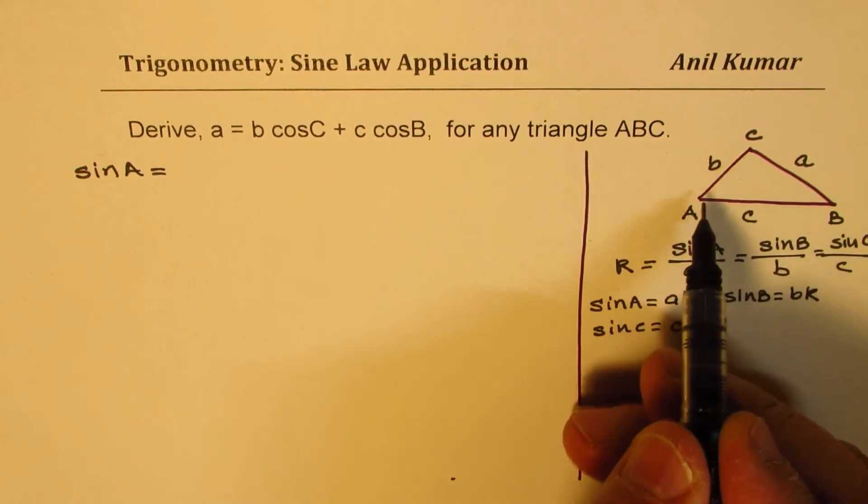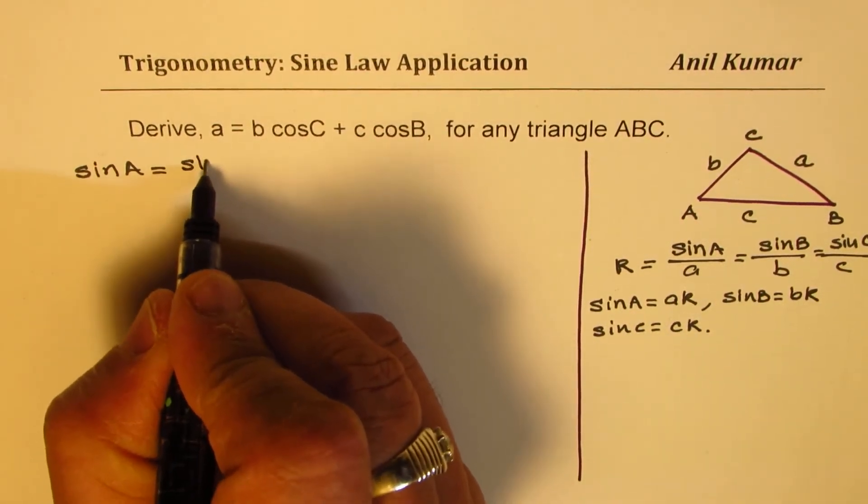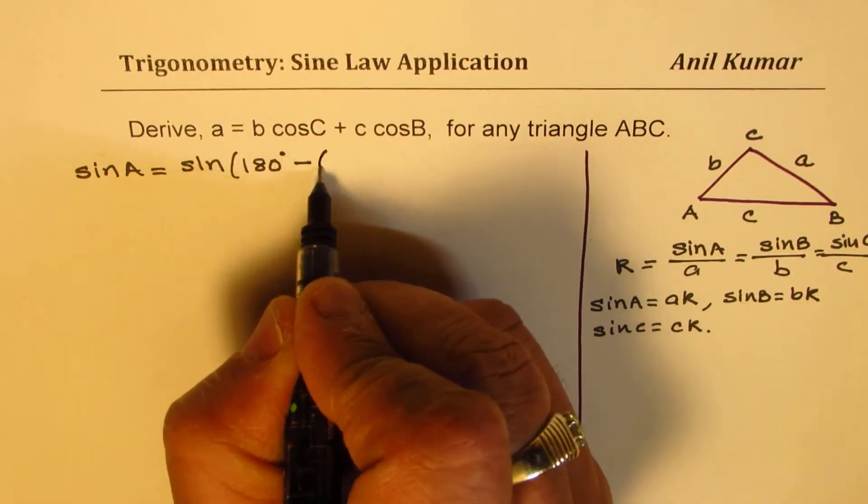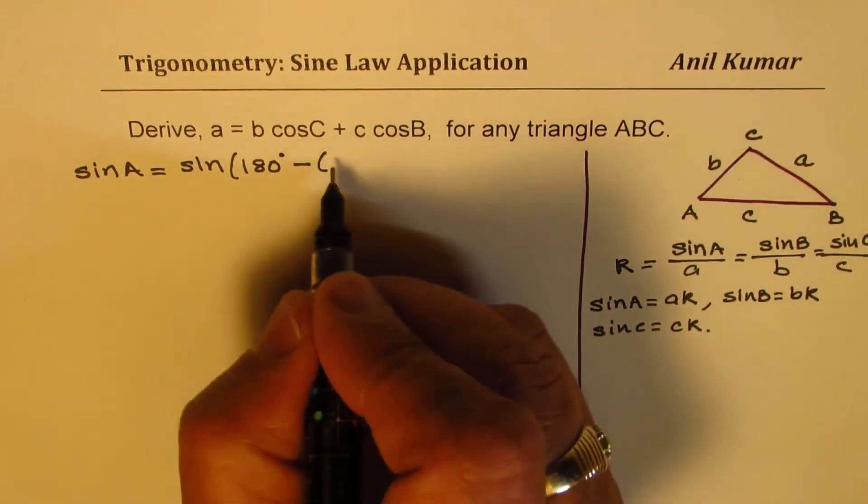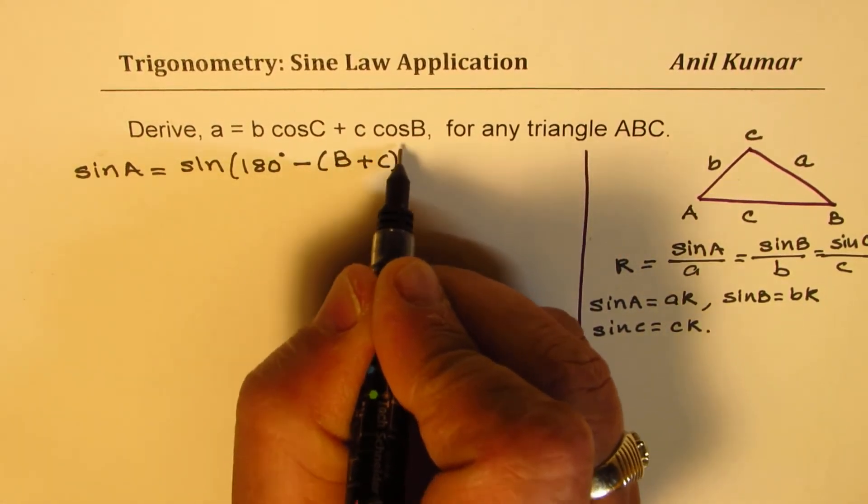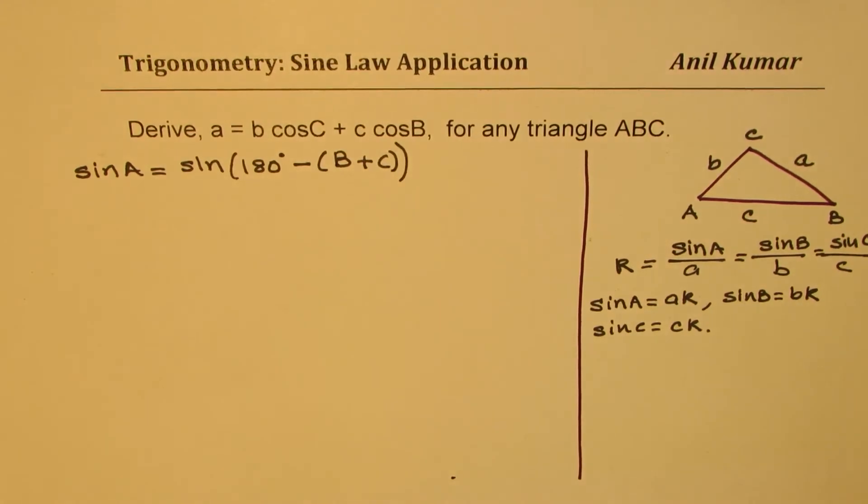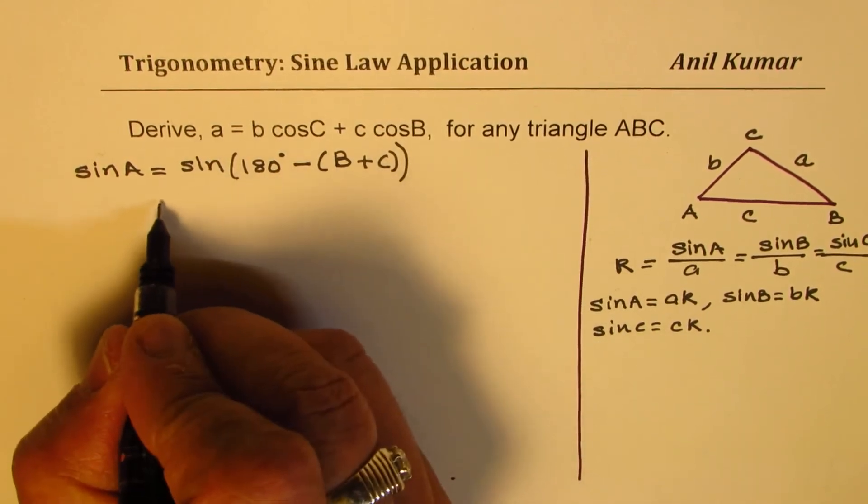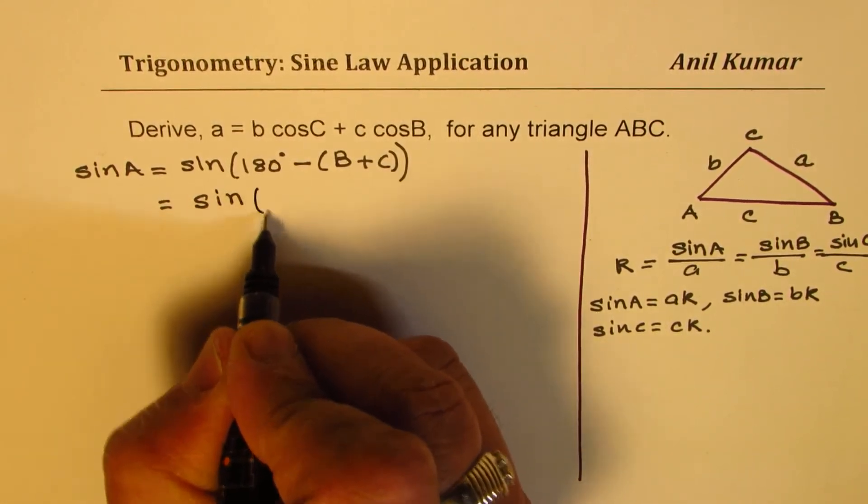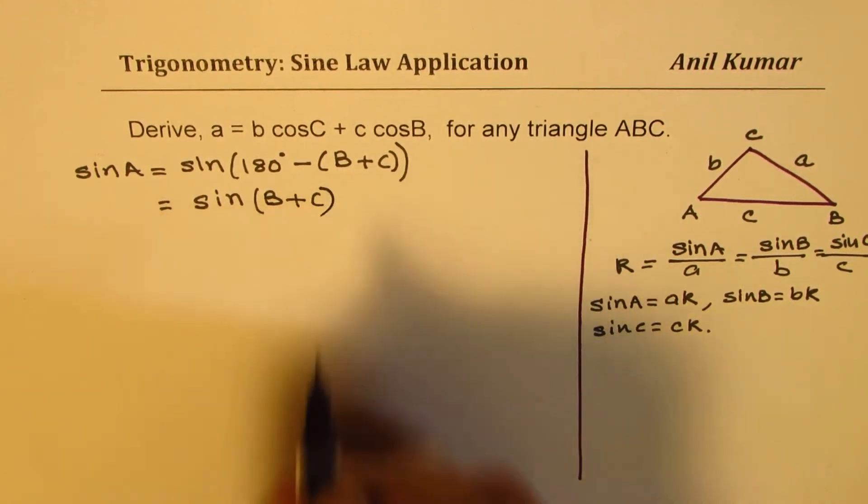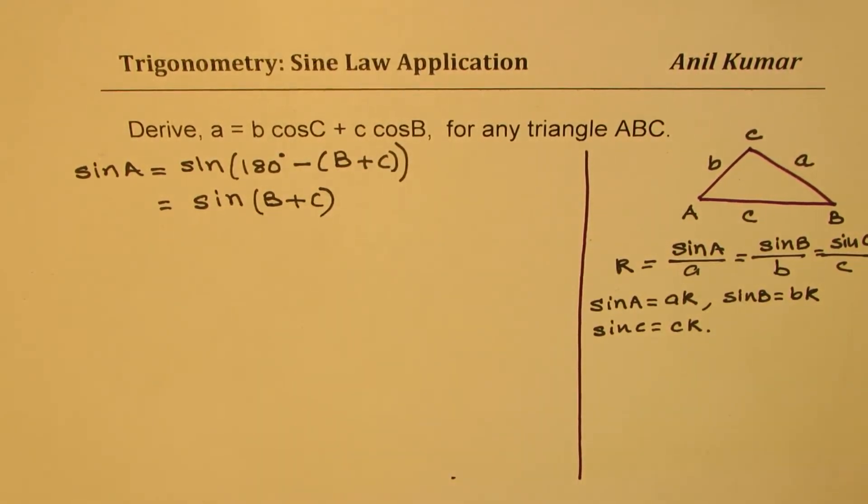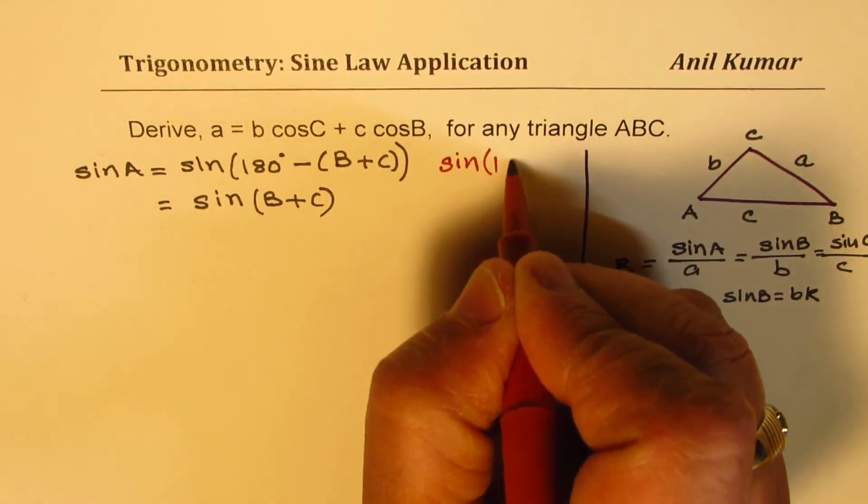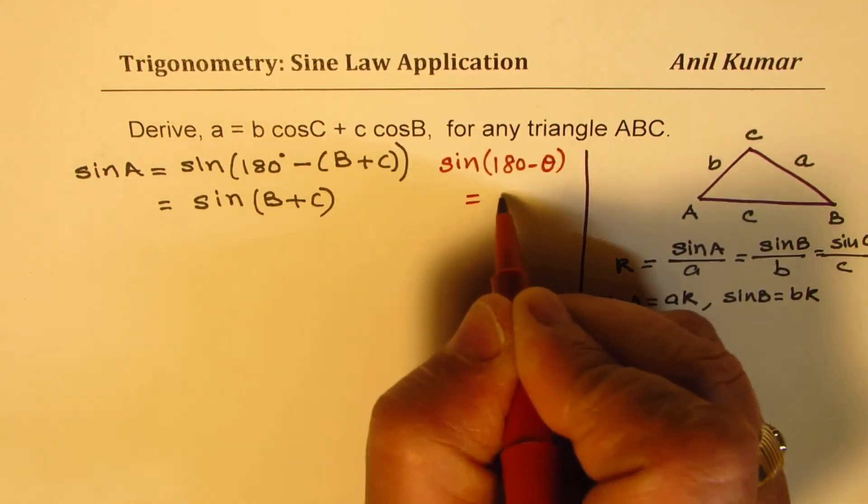In any triangle, total sum is 180 degrees. So we could write this as sine of 180 degrees minus sum of B and C. So that is how we can write sine A. Now, sine of 180 minus theta is basically equal to sine of theta. So this is equal to sine of B plus C. This we know from the rule that sine of 180 minus theta equals sine theta.